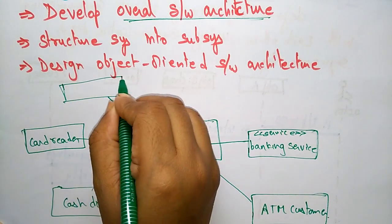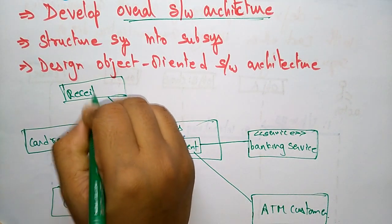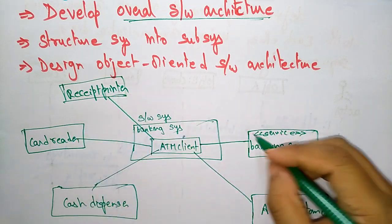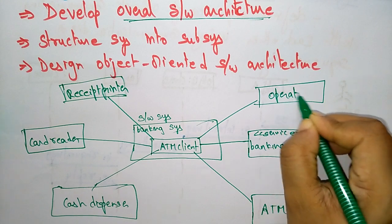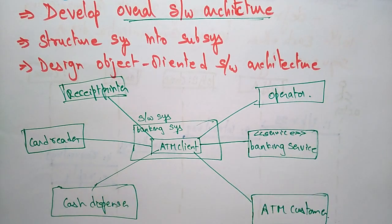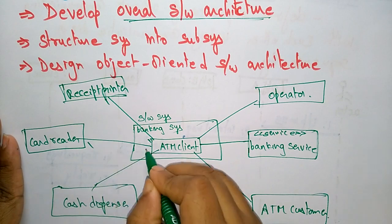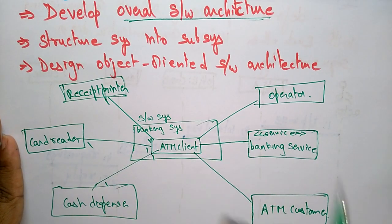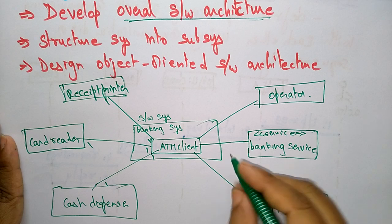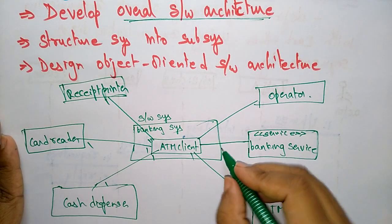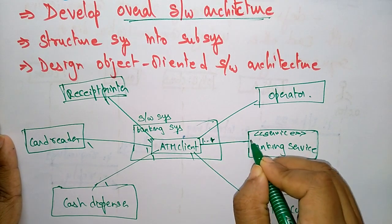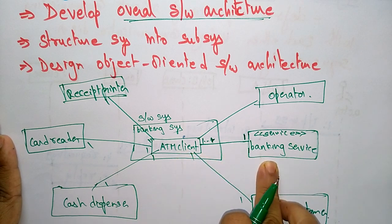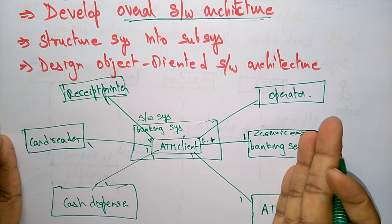Other components include the receipt printer and the external operator, all communicating with the ATM client in the banking system. There is a one-to-one relationship — one ATM client can use only one cash dispenser at a time. The ATM client and the banking service have a one-to-many relationship: many clients can interact with only one banking service.